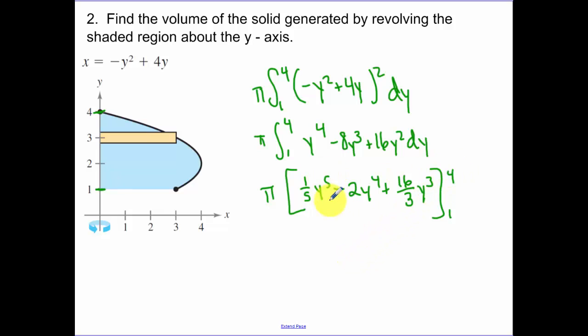Honestly, it's a little bit big when you plug it into 4y to the fifth. So I'm not going to lie to you guys. I cheated and used my calculator on this. So when I plugged in, I got 1024 over 5 minus 512 plus 1024 over 3.